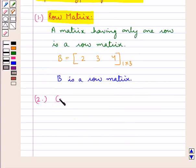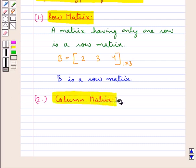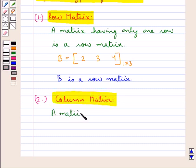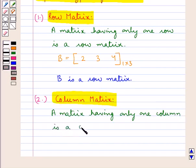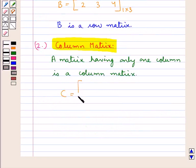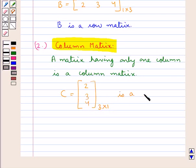Next is a column matrix. A matrix having only one column is a column matrix. Consider a matrix C with elements 2, 3, 4. This is a 3 by 1 matrix — that is, there are 3 rows and 1 column. As there is only one column in this matrix, we say that matrix C is a column matrix.